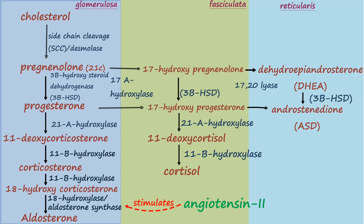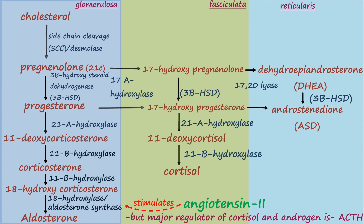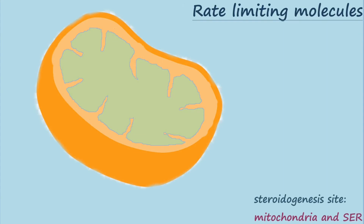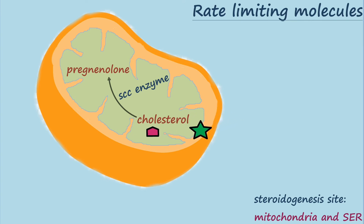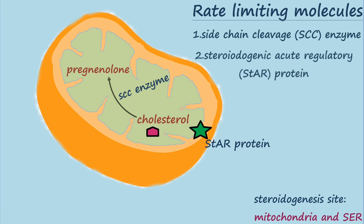One important point to keep in mind: the major regulator for synthesis of cortisol and androgens is ACTH, whereas the major regulator for synthesis of aldosterone is angiotensin II. The rate-limiting step of cortical hormone synthesis is the first reaction, catalyzed by side-chain cleavage enzyme or desmolase. Since this reaction occurs in the mitochondria, it is very important to transport cholesterol from the cytoplasm to the mitochondrial matrix, which is carried out by the StAR protein. This is why hormone synthesis is regulated at both the side-chain cleavage and StAR protein levels, and both are stimulated by ACTH.